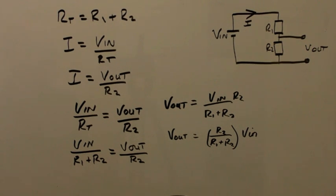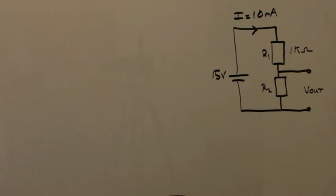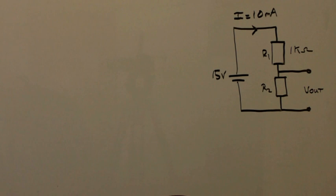Now we have the equation, let's put this into practice and do an example. The circuit consists of a DC supply of negligible internal resistance of 15 volts. We have two resistors connected as shown. R1 equals 1 kilohm, and R2 we're not given a value for. The current flowing through the circuit is 10 milliamps. We're asked to calculate the value of R2 and Vout.